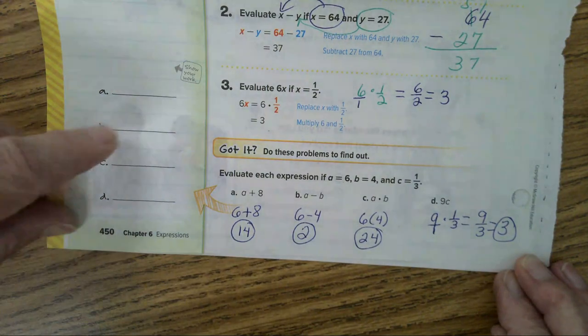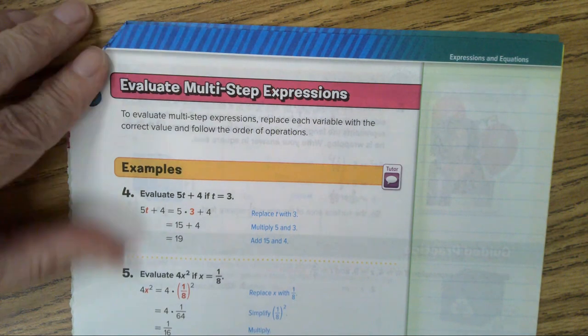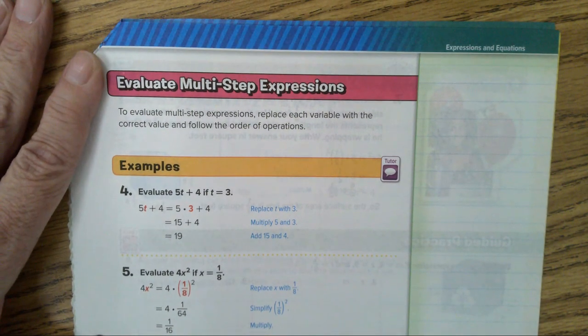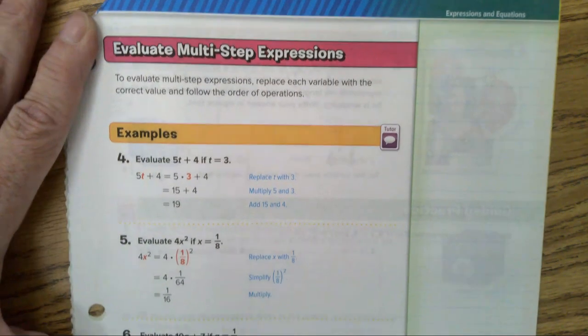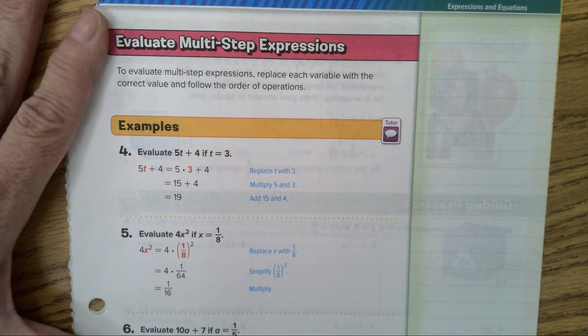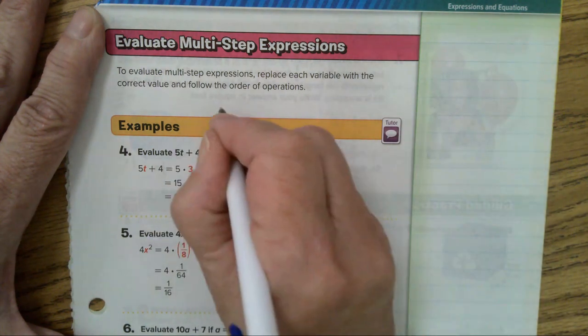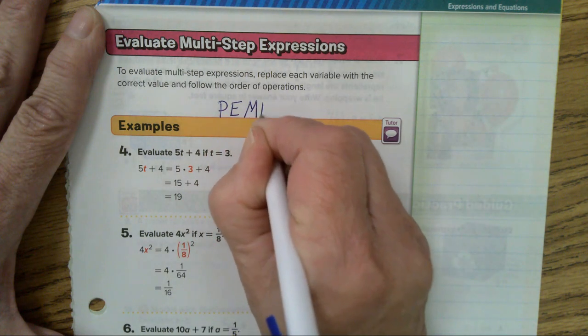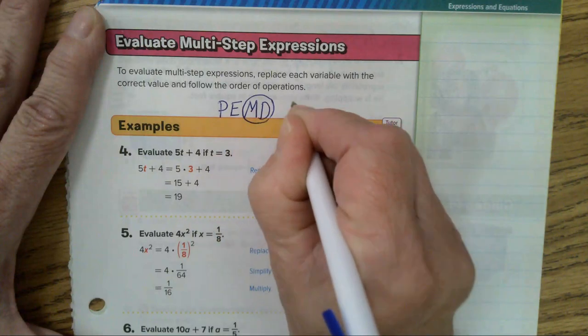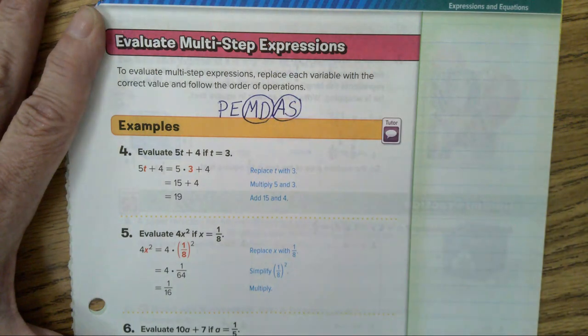Let's go on to page 451. Here, we are going to evaluate multi-step expressions. So, these expressions, the ones we're going to do next, will require more than one step. To evaluate multi-step expressions, replace each variable with the correct value and follow the order of operations. Now, the order of operations, PEMDAS. Parentheses, exponents. Then you do multiplication and division. But if the division comes first, you do division. And you end with addition and subtraction. If the subtraction sign comes first, you do the subtraction.